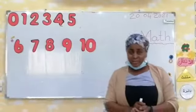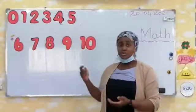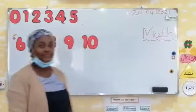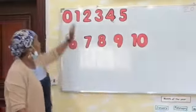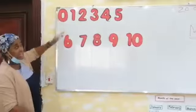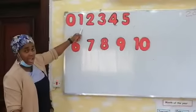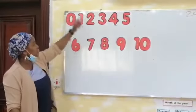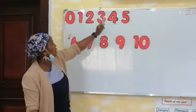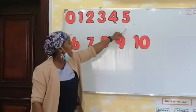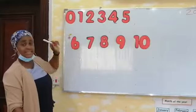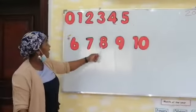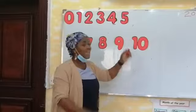Let's start first by counting from 0 to 10. Let's count. 0, 1, 2, 3, 4, 5, 6, 7, 8, 9, 10.